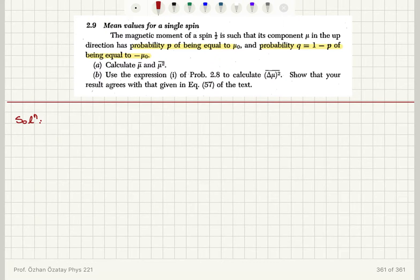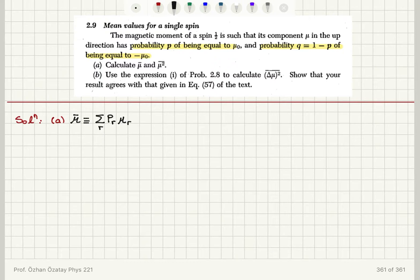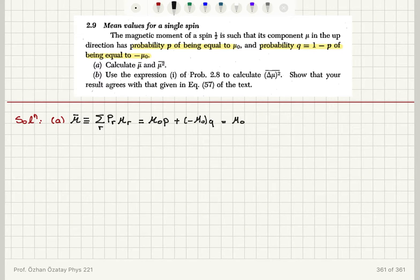We are going to use the definition of the average in order to calculate mu bar. By definition, mu bar is equal to the sum over all possible values of mu multiplied by their corresponding probabilities, p_r times mu_r. So mu has two possible values: plus mu_0 or minus mu_0. It has the value plus mu_0 with probability p, and the value minus mu_0 with probability q.